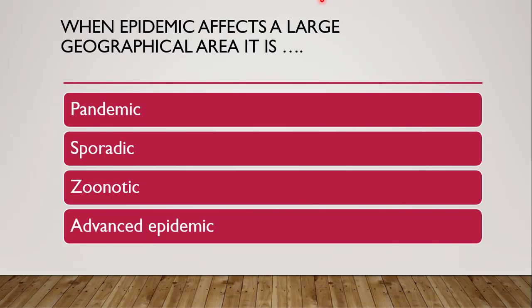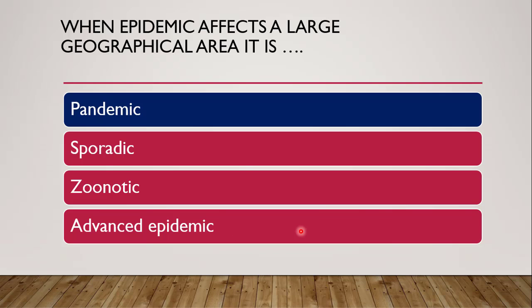Next question: when an epidemic — which is beyond expected numbers — affects a large geographical area, it is known as pandemic. Pandemics occur when epidemics affect a larger geographical area such as a continent or country, affecting most of the population. For example, the influenza pandemic which occurred from 1918 to 1957.